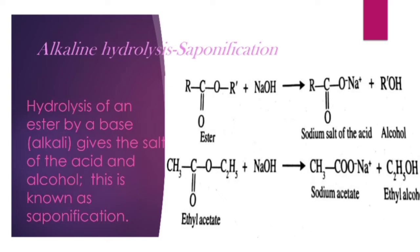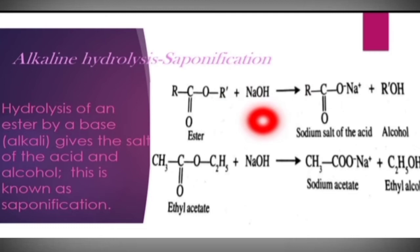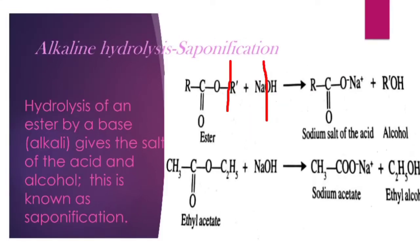The next reaction is alkaline hydrolysis, also called saponification. Saponification is the formation of a soap molecule. Alkaline hydrolysis is the hydrolysis of an ester by a base to give the salt of the acid and an alcohol. NaOH breaks into Na⁺ and OH⁻, and Na⁺ attaches to the RCOO⁻ part of the ester.